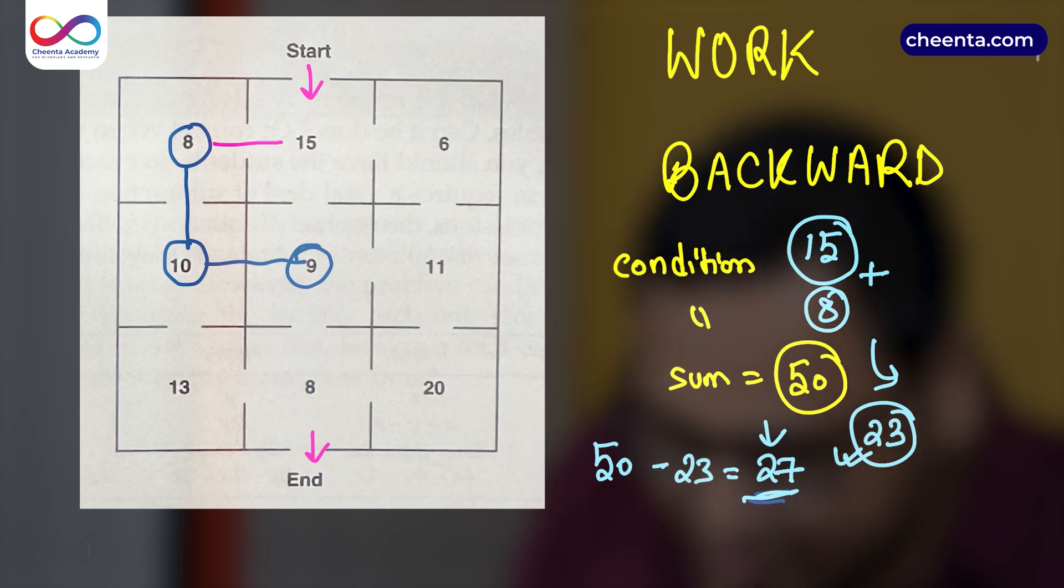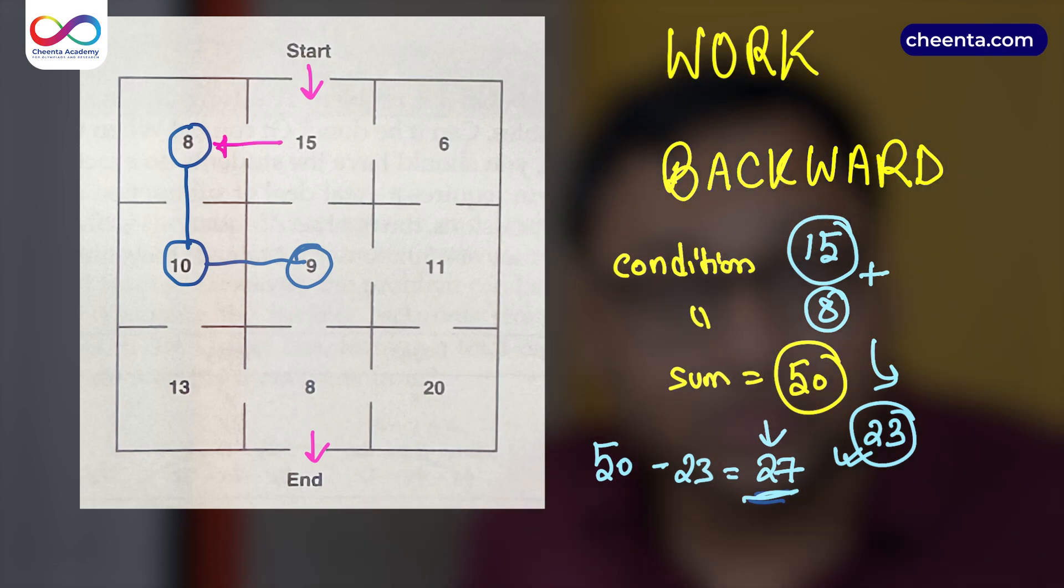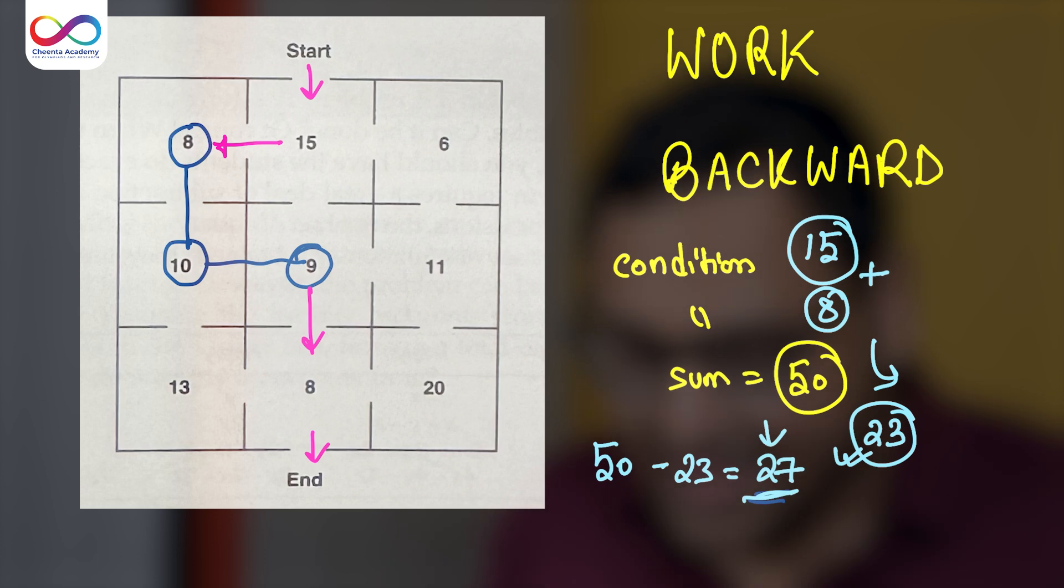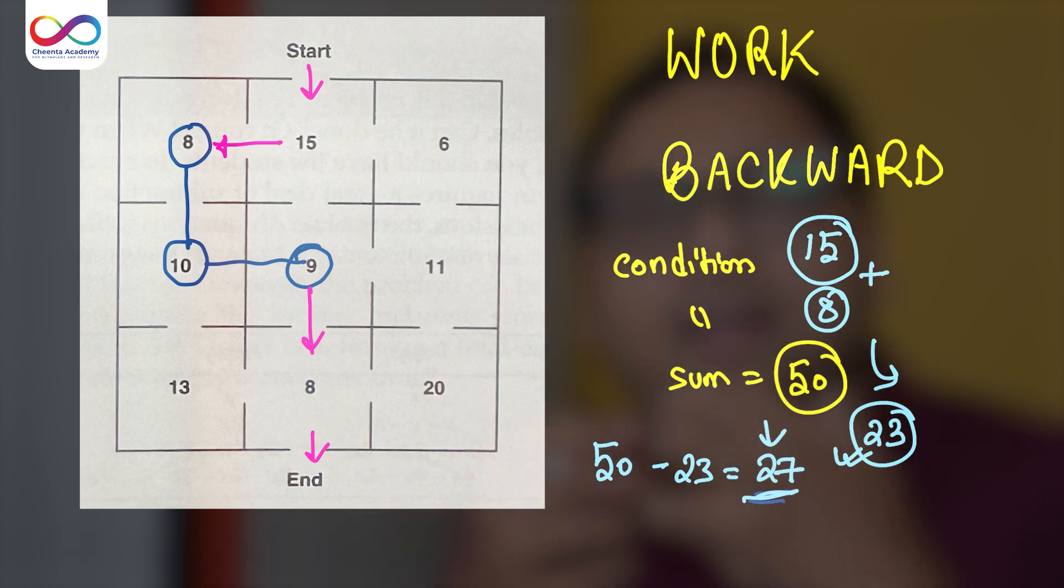You start with 15, of course, that's what you have to do. And you end with 8. That's 23. And for the remaining path, you're just looking for 27. So working backward can be a really useful strategy to solve a multitude of mathematical problems.